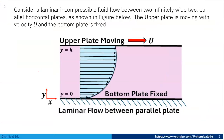Considering laminar incompressible fluid flow between two infinitely wide parallel horizontal plates as shown in the figure below. The upper plate is moving with velocity U and the bottom plate is fixed, with velocity zero. The distance between the two plates is h, and the coordinate starts from the bottom plate, so y equals 0 at the bottom and y equals h at the upper plate.